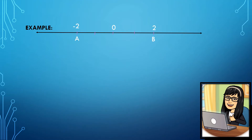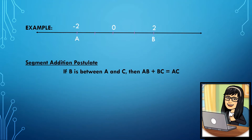We have capital letter A which symbolizes point A, and capital letter B which symbolizes point B. If we are going to get the distance from A to B, we have to subtract the coordinates of A and B and then get the absolute value. So we have two minus negative two, that is four. The absolute value of four is four. Therefore, the distance from A to B is four units.